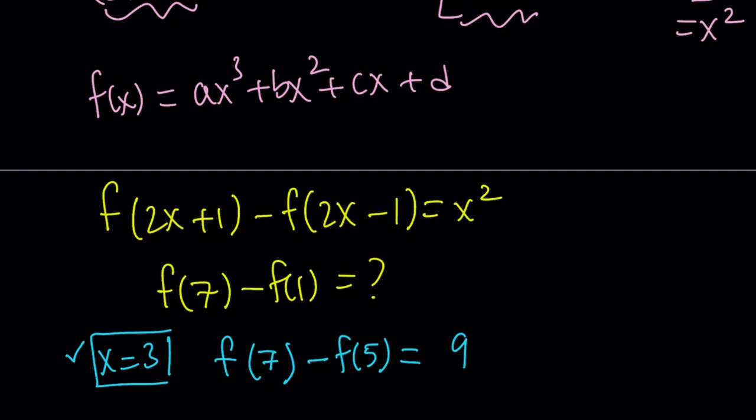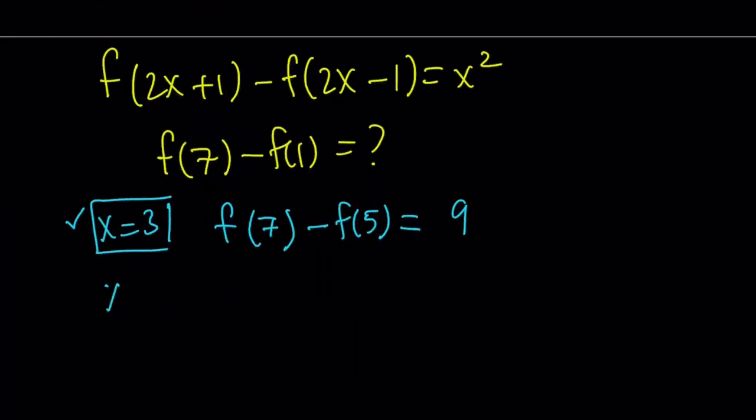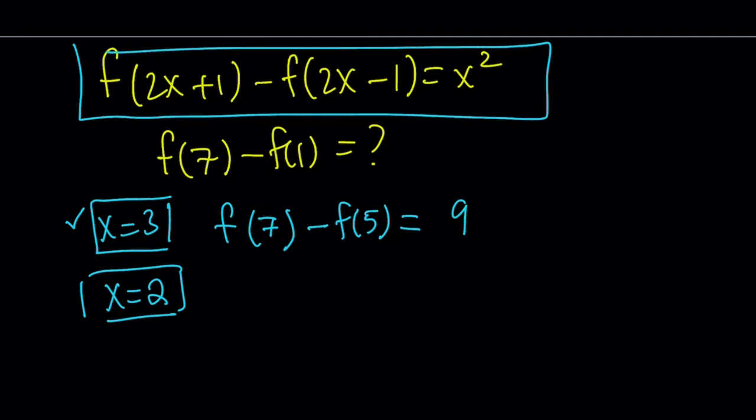And yes, there is a way to do it because 5 is an odd number. I can replace x with 2. And of course, in my original equation, if I replace x with 2, then I get f of 5 minus f of 3, 2 times 2 minus 1, equals 2 squared, which is equal to 4. Awesome.